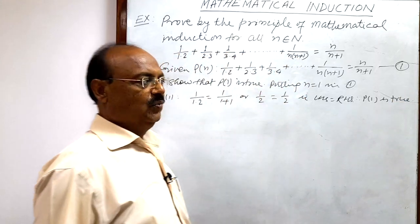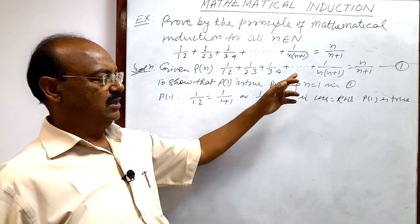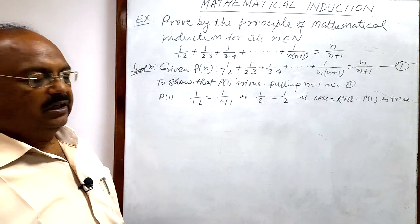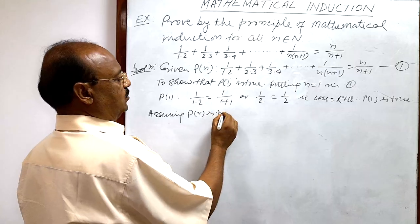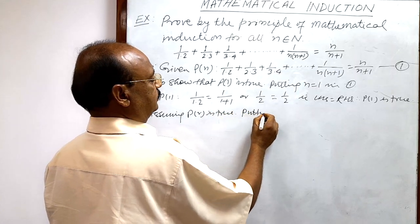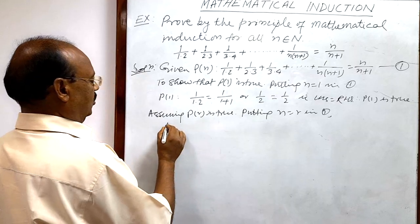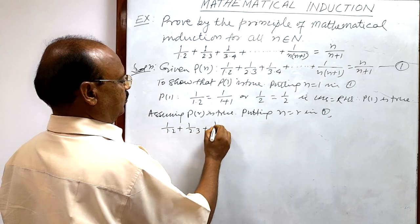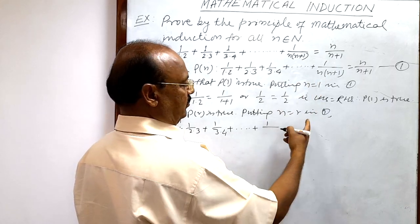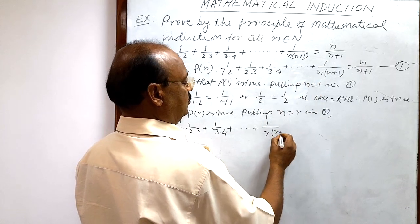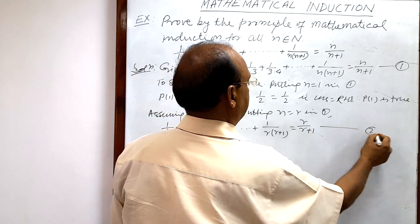The second step is to assume that P(r) is true. Putting n = r in relation number 1, we get: 1/(1×2) + 1/(2×3) + 1/(3×4) + ... + 1/(r×(r+1)) = r/(r+1). We assume this holds, and call it relation number 2.